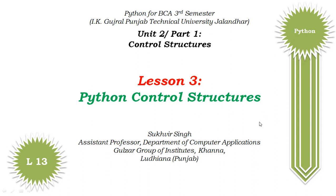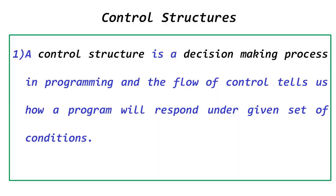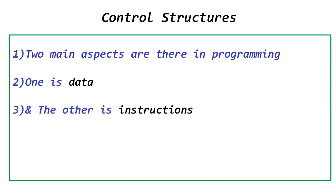First of all, let's go through the slides: Unit 2, Part 1 — Control Structures, Lesson 3 — Python Control Structures. What is the meaning of control structure? It is a decision-making process in programming. The flow of control tells us how a program will respond under a given set of conditions. For example: if-else, nested if-else, for loop, while loop — all are control statements.